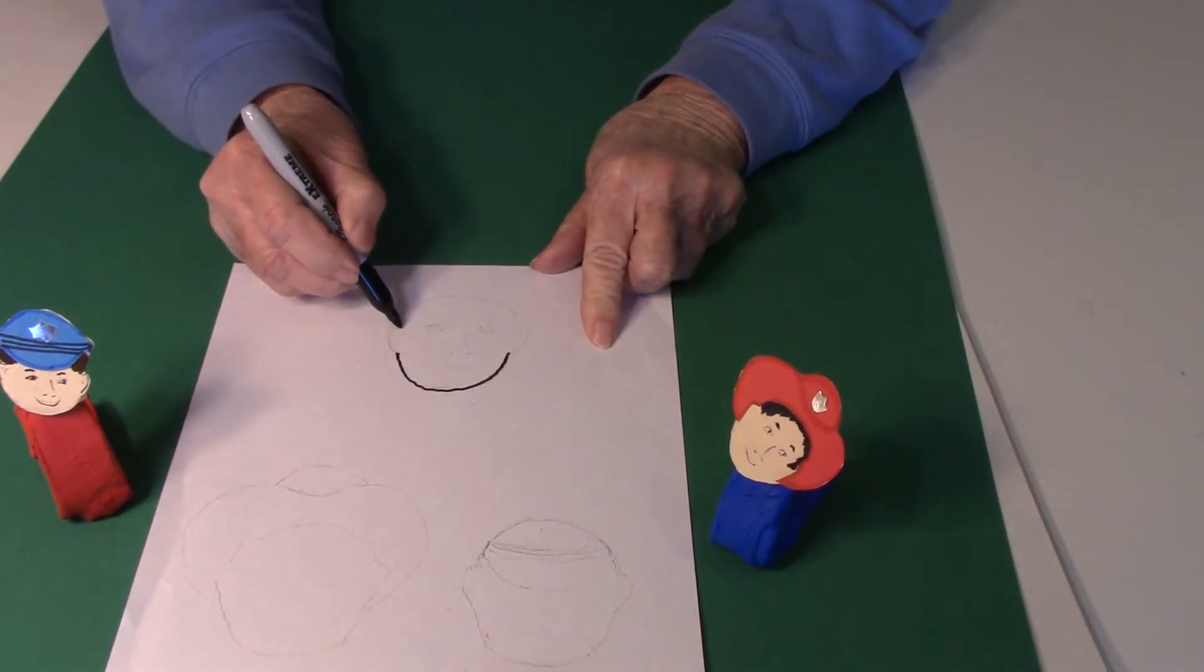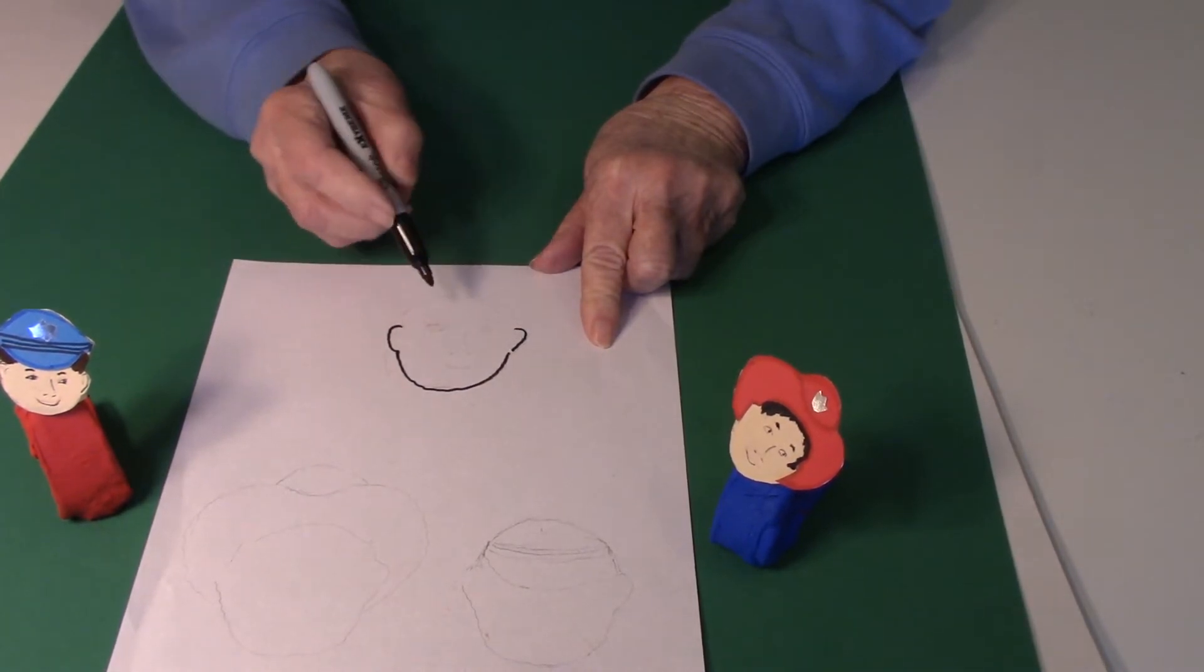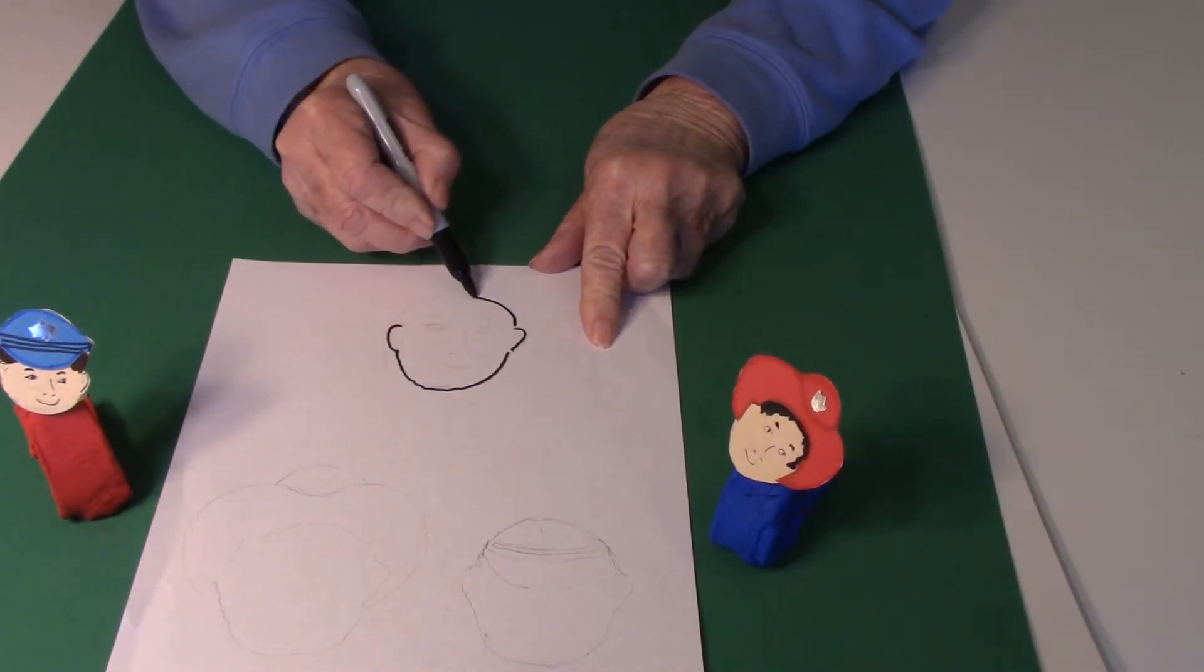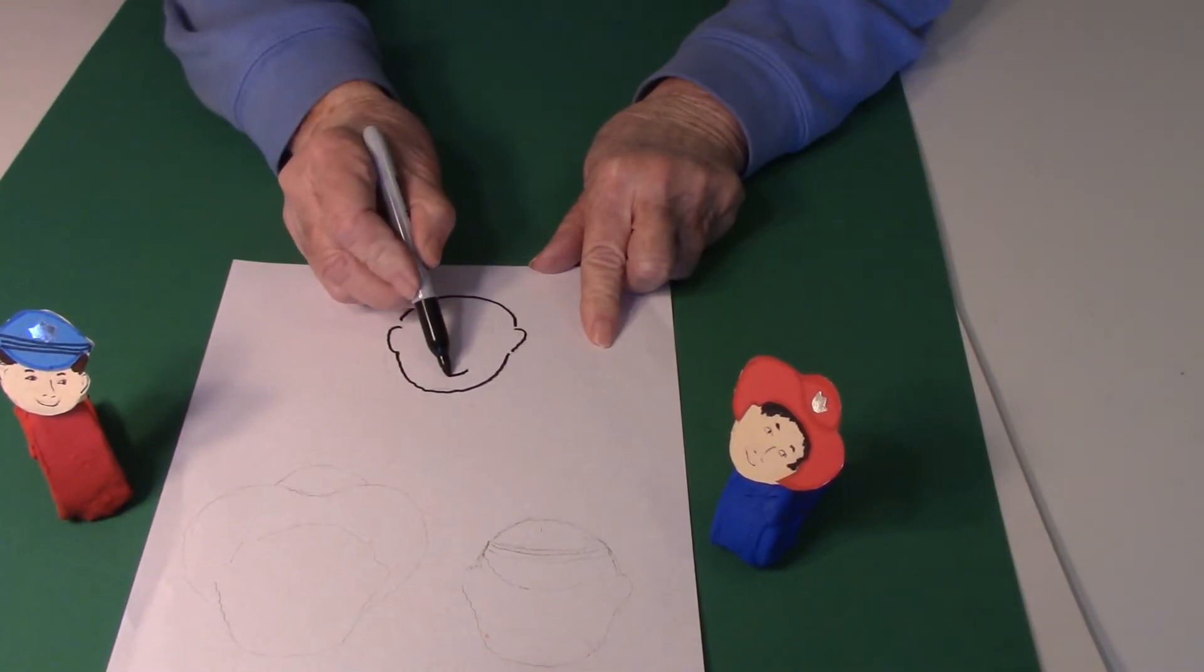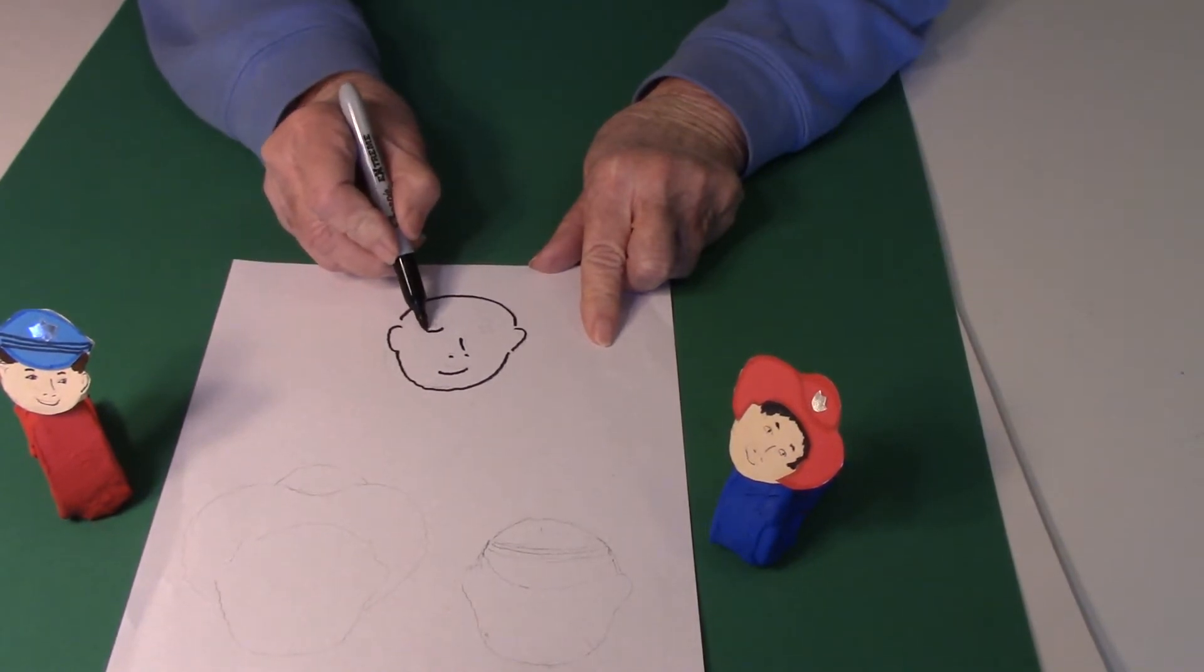And then made some little backward C's for ears and then a round circle for the top of the head, and then just a little simple mouth with a little nose and some eyes.